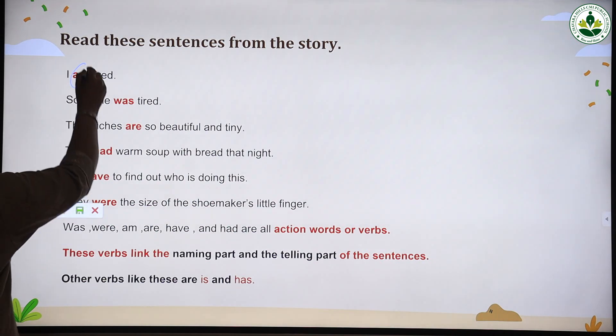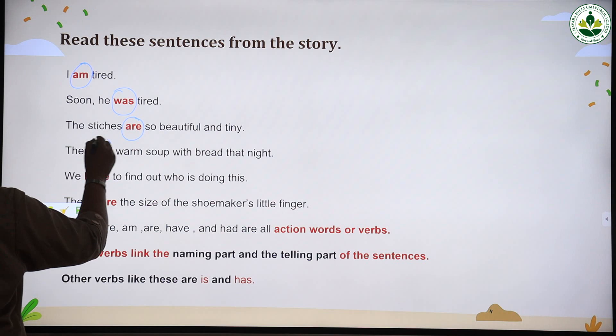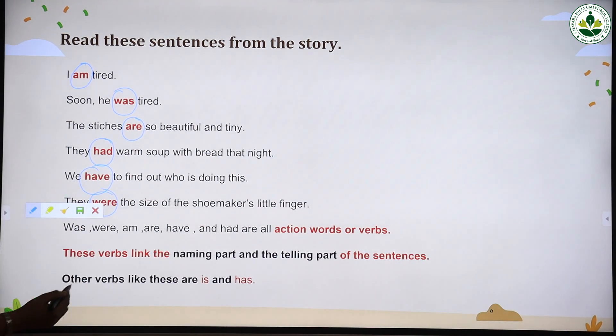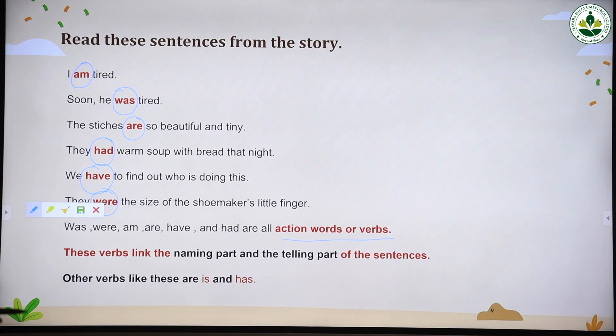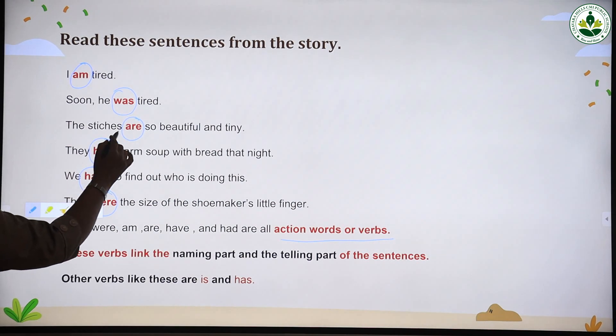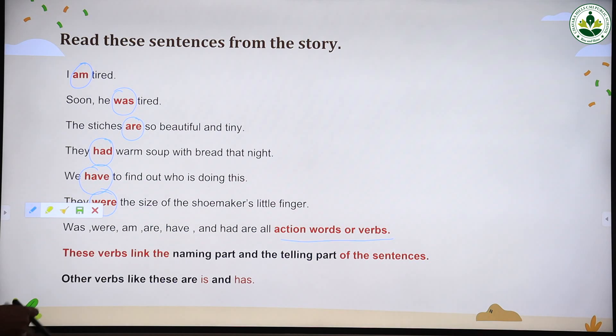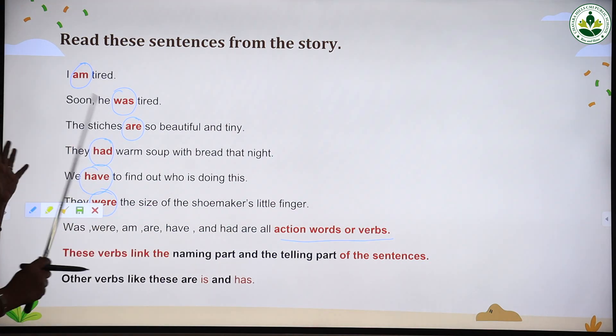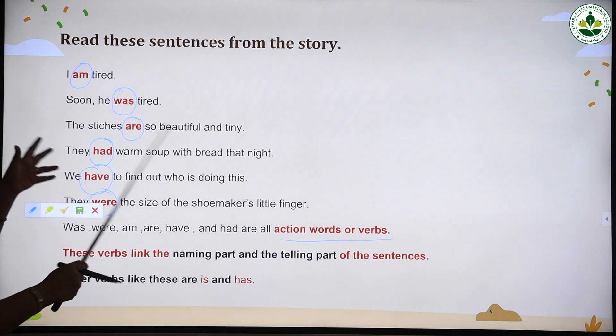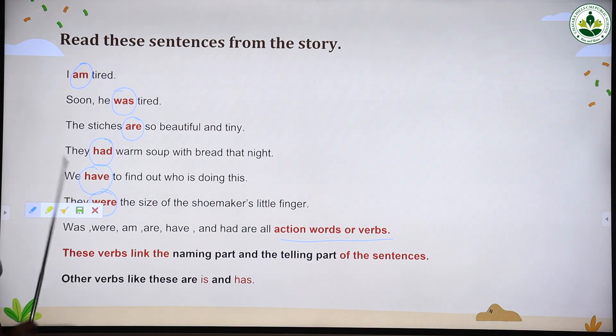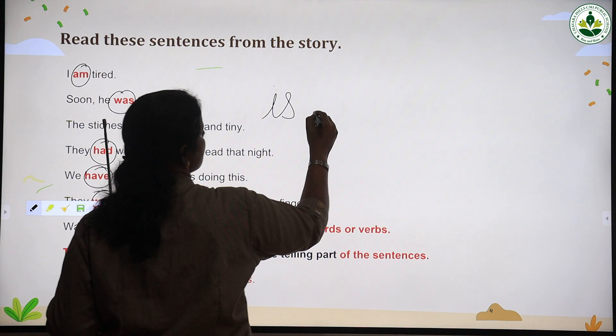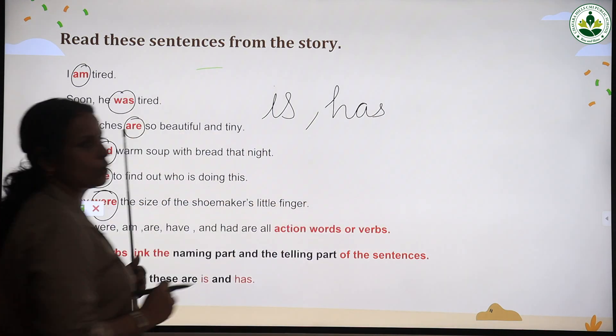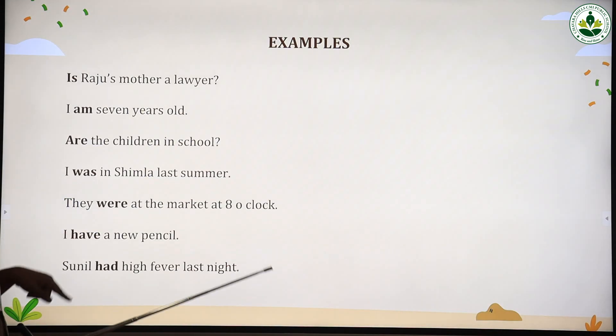The words am, was, are, had, have, were—these all are action words or verbs. In the previous chapter, we studied verbs or action words in present tense. The words with red colored letters, these are verbs or action words. These verbs link the naming part and telling part of the sentences. Other two verbs are is and has, which also help link the naming part with the telling part.